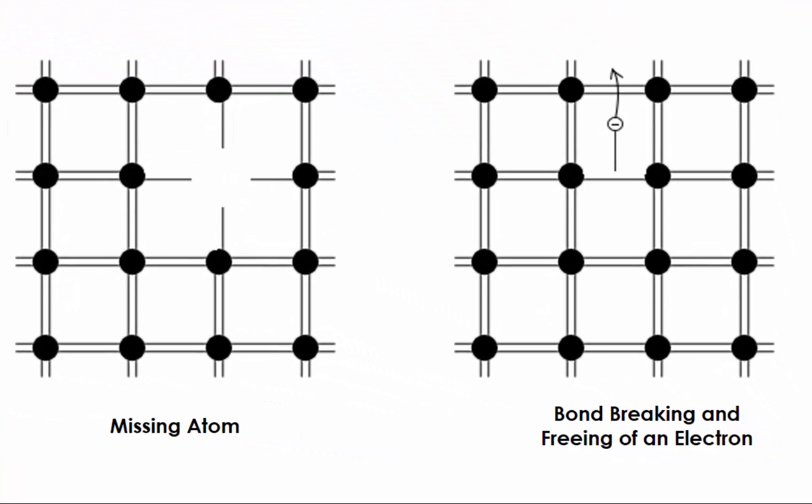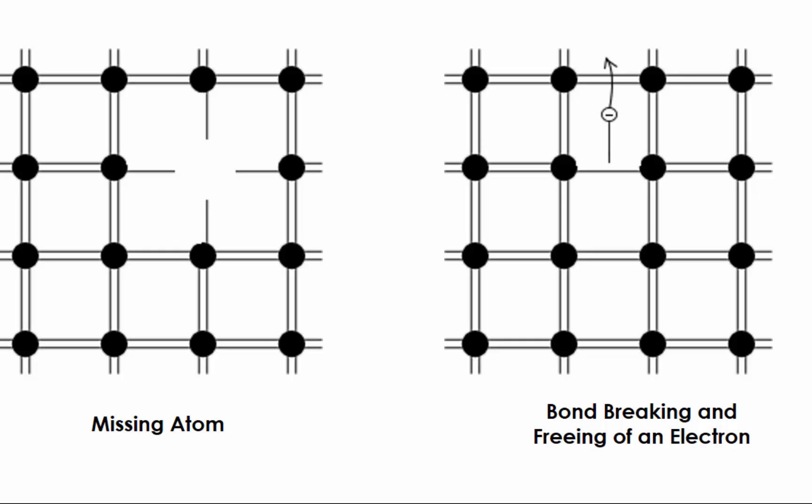We can use this bond model to illustrate some applications to show its usefulness. The first example shows a missing atom, which is a point defect in the crystal. The second example shows the breaking of a valent bond and the release or freeing of an electron.